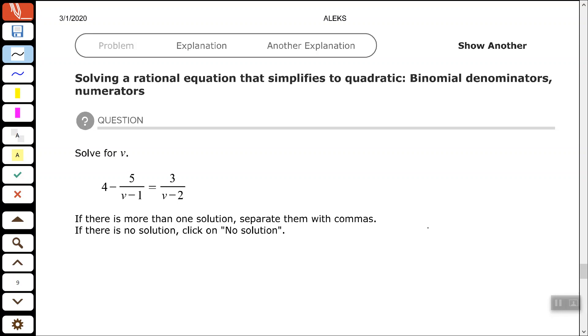Hey, good people. Arthur Morris here. Hope all is well. In this video, we're going to look at solving this equation. I want to solve it for V. We have 4 minus 5 over V minus 1 equals 3 over V minus 2.